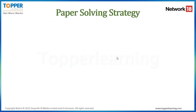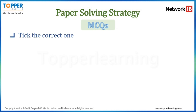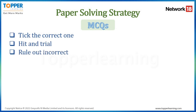Now let's talk about strategies you can use while solving your paper. There will be 2 types of questions in your exam: MCQs and subjective questions. For MCQs, there are three approaches to keep in mind: first, tick the correct one — just write the correct option in your answer sheet; second, hit and trial; and third, rule out incorrect options. We'll discuss all of these one by one.